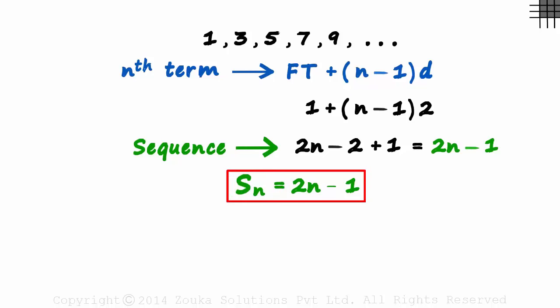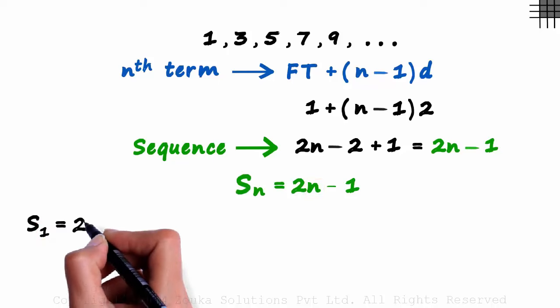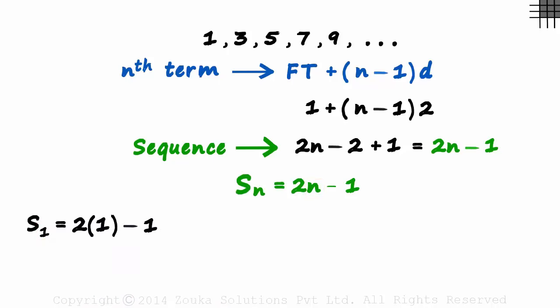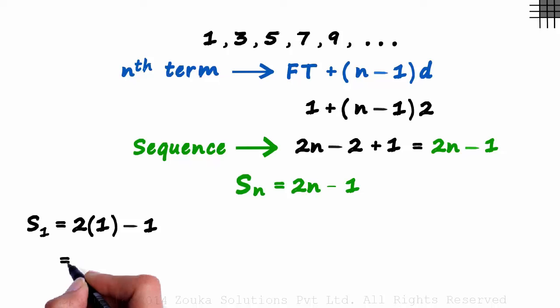To find the first term, all we do is substitute 1 in place of n. We get 2 times 1 minus 1. And 2 minus 1 gives us 1.